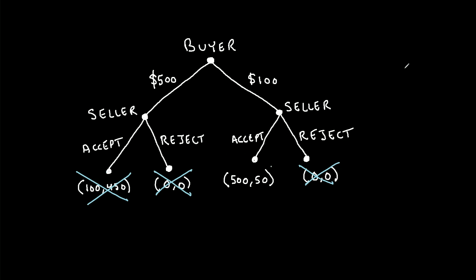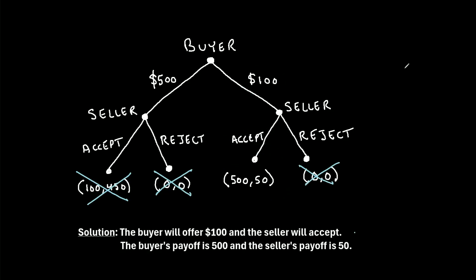So ultimately, the outcome of this game is going to be this right here, where the buyer will make an offer of $100 and the seller will accept. And the buyer will receive a payoff of $500 while the seller receives a payoff of $50. So that will ultimately be the solution to this game.